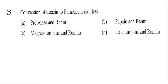Question twenty-five: Conversion of casein to paracasein requires — option A protease and rennin, option B papain and rennin, option C magnesium ion and rennin, or option D calcium ion and rennin. The right answer is D, calcium ion and rennin.